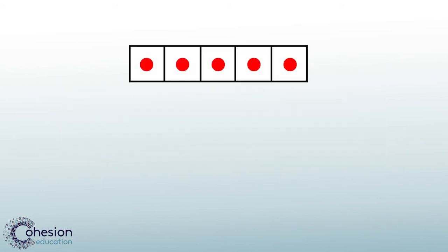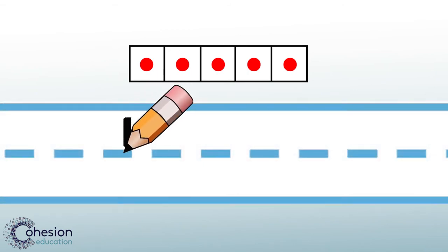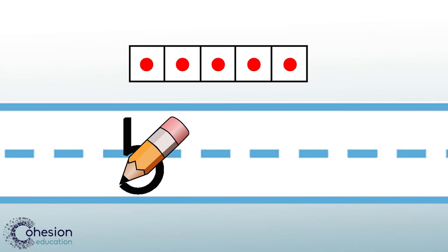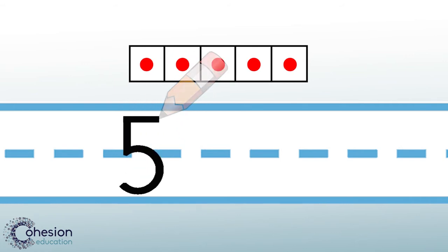Let's take a look at how to write the number 5. To write the number 5, start with your pencil at the top and move straight down and curve around. Then pick your pencil up and place it at the top where you began and move across.